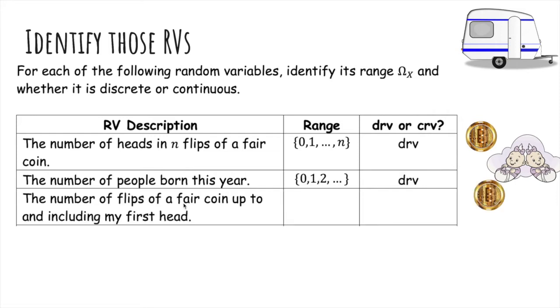The number of flips of a fair coin up to and including my first head, well, it takes at least one flip, but it could actually take arbitrarily long. And again, this is a subset of the integers, so it's a discrete random variable.